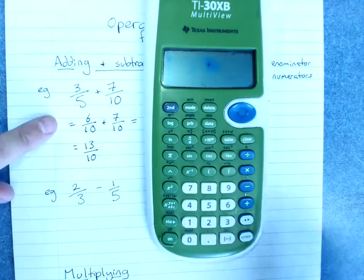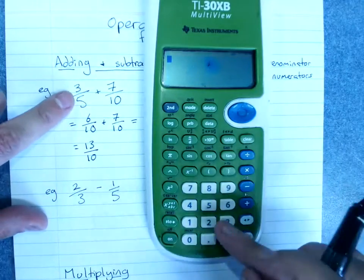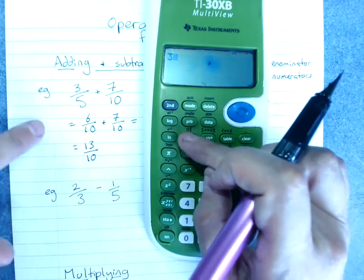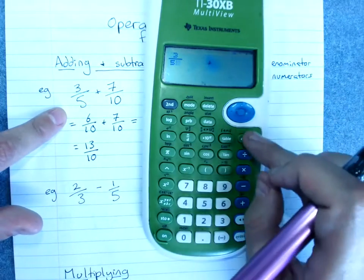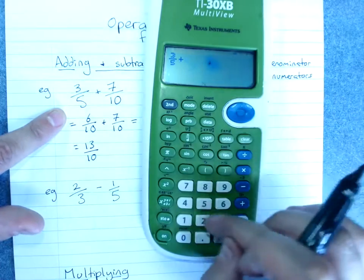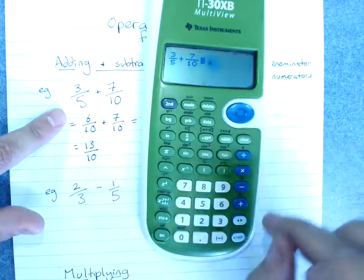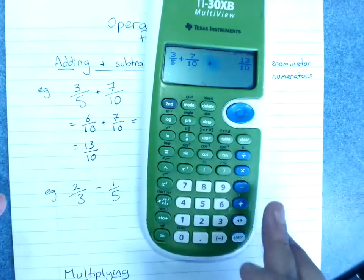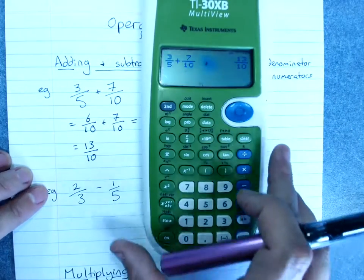If we wanted to do this on the calculator instead, 3, use the fraction key, over 5. To get out of it, use the arrow, plus 7 over 10, pop that in, I've got 13 over 10. We got the correct answer.